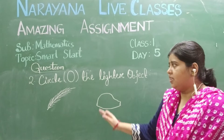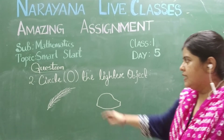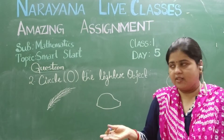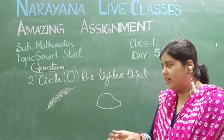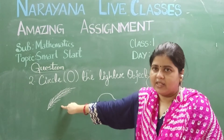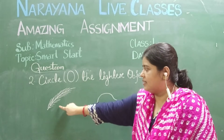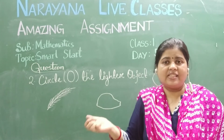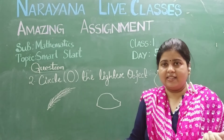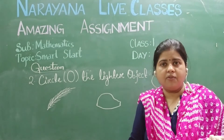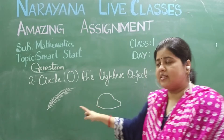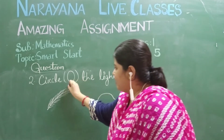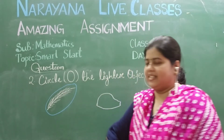Now we come to the second question from the assignment paper: circle the lighter object — the one which has got less weight. This is a feather, like a bird's feather or a peacock's feather, and this is a stone. When you hold both in hand, obviously the stone will be heavier than the feather. So the feather is the lighter object — circle the feather.